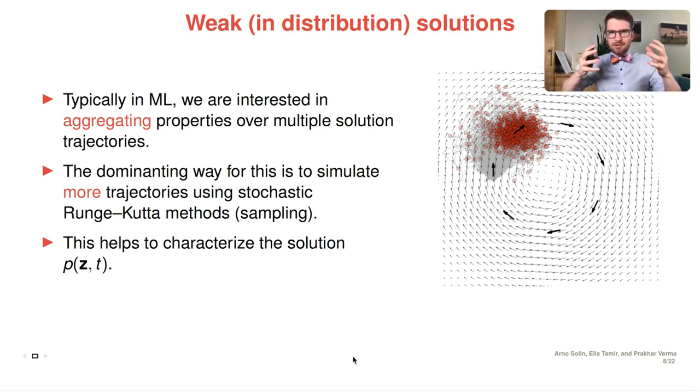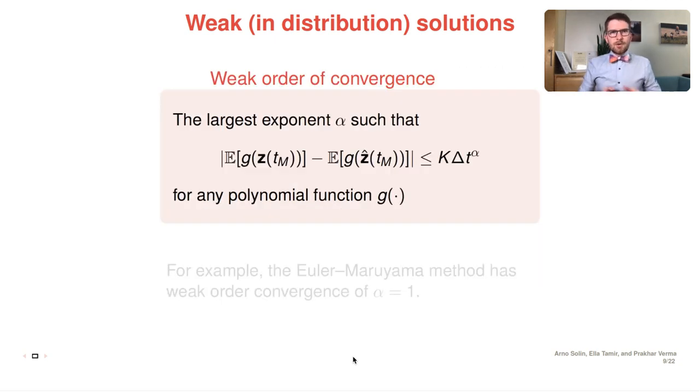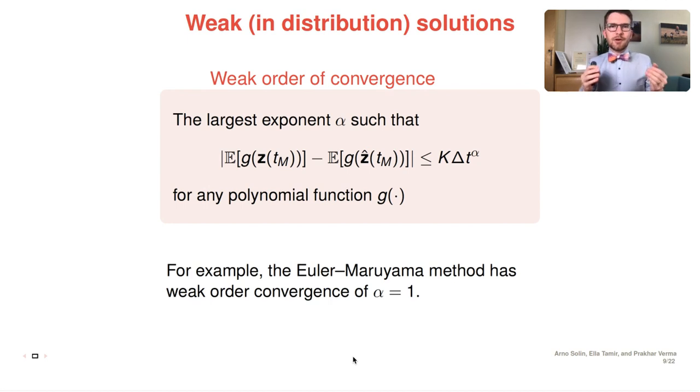And still you can use simulation, such as stochastic Runge-Kutta for this, which basically means that you try to characterize the space- and time-dependent probability distribution by sampling. Here, luckily, the requirements are not as strong as for strong order convergence, and even a slightly bigger step size might be decent.